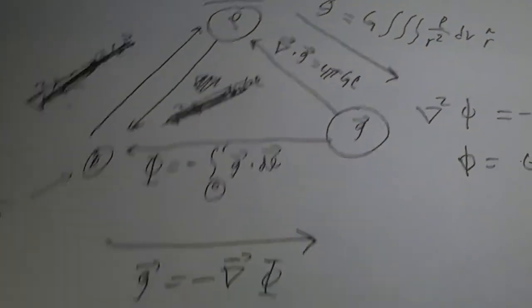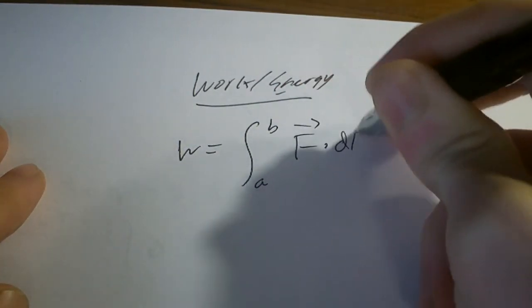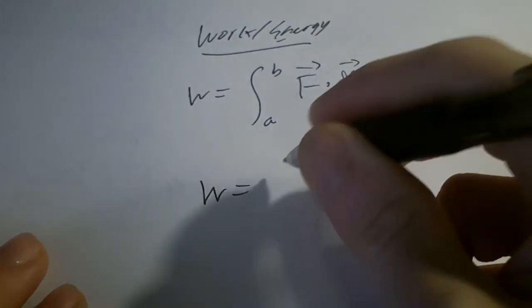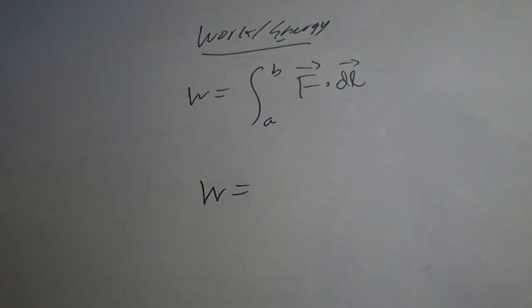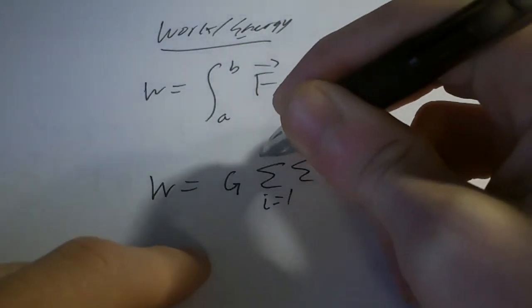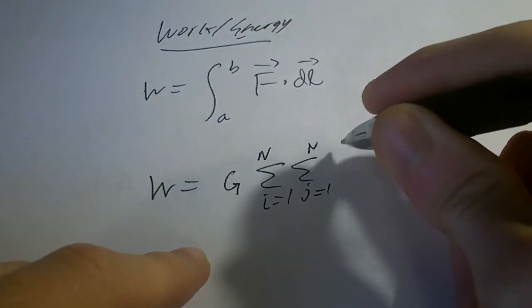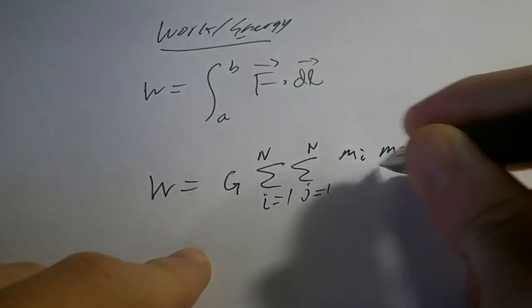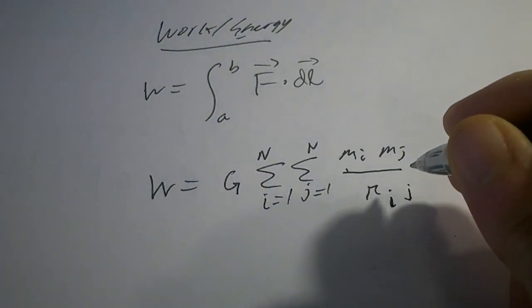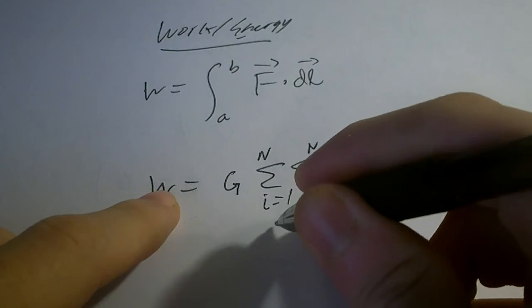One last thing I'd like to talk about is work and energy from gravitational fields. Recall that work for a generic case is the integral from a to b of F·dl. The work to assemble gravitational energy is G times the double summation from i equals 1 to N and j greater than i of m_i m_j over the distance between r_i and r_j.